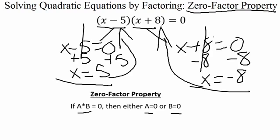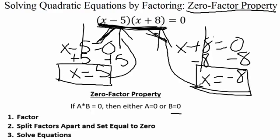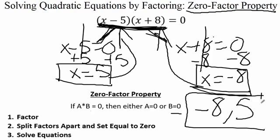To summarize the steps: step one, if the example is not already factored, factor it. Step two, split the factors into two separate equations and set them each equal to zero. Step three, solve those equations to get your solutions. Here our solutions are negative eight and five — we typically put answers in order from smallest to biggest.